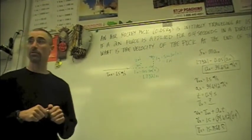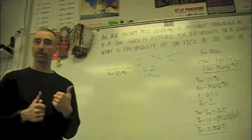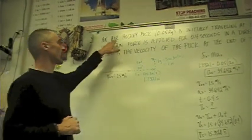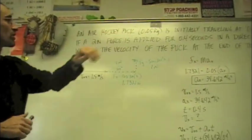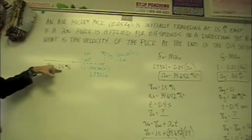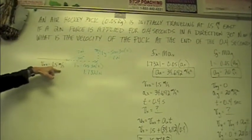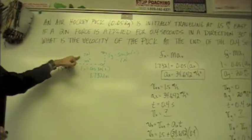So this is a Newton's second law example where we have an initial velocity. In this case we have an air hockey puck and it's initially traveling 1.5 meters per second in the east direction and then we're going to put a force on it of two newtons.